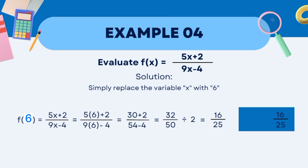Now solve. Let's start with the numerator: 5 times 6 plus 2. 5 times 6 is 30, then add 2, equals 32. Next, the denominator: 9 times 6 minus 4. 9 times 6 is 54, then minus 4 equals 50. Simplify 32 over 50. Using the GCF method, divide by 2: 32 divided by 2 equals 16, and 50 divided by 2 equals 25. Therefore, f(6) = 16/25.